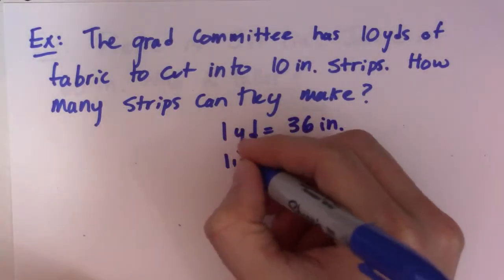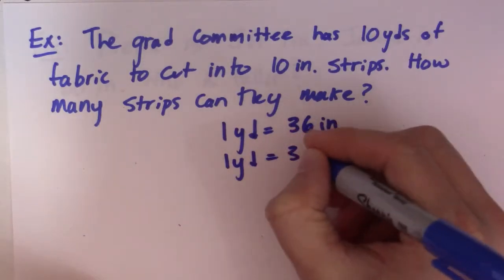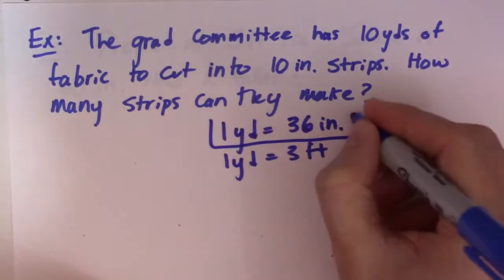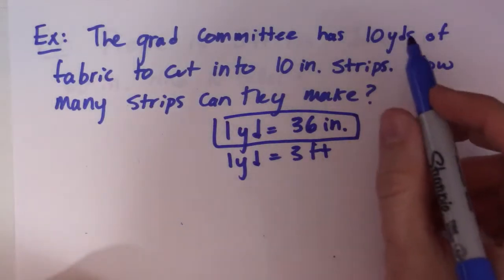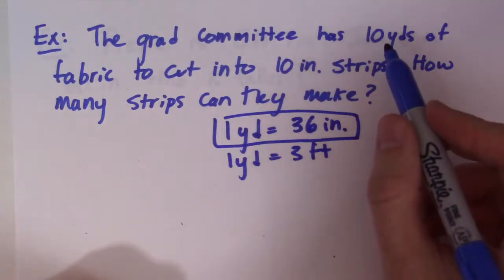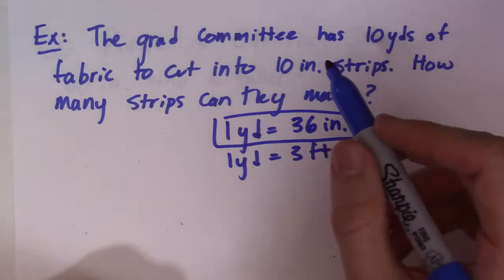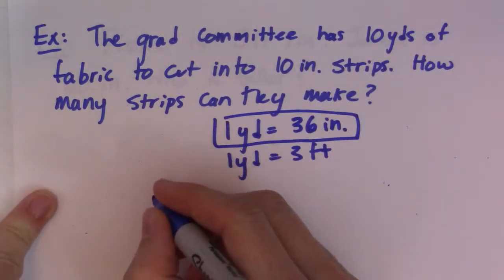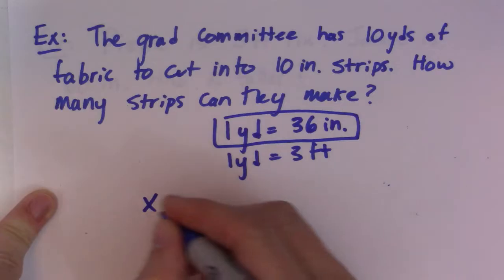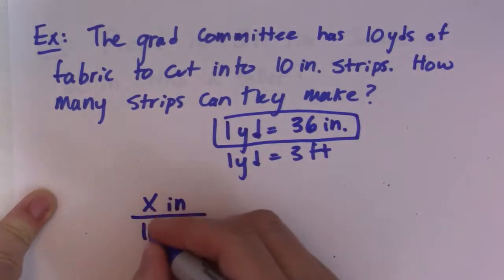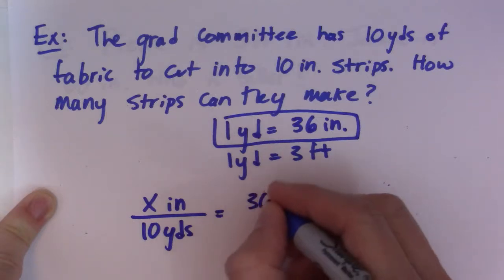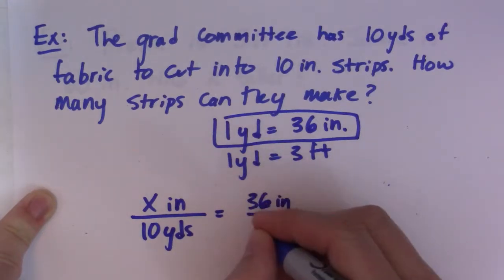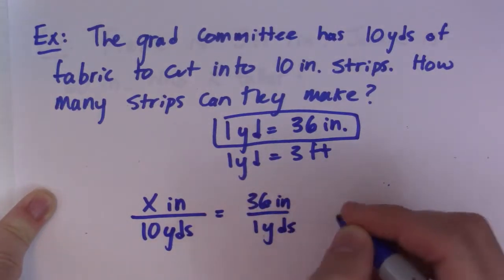The way I remember this is that one yard is equal to 3 feet. So we'll use this, but this is how I remember this conversion. So again, what I want to do is change this yard into inches. So I'll say x inches - I want x inches - and then 10 yards is equal to 36 inches over 1 yard.